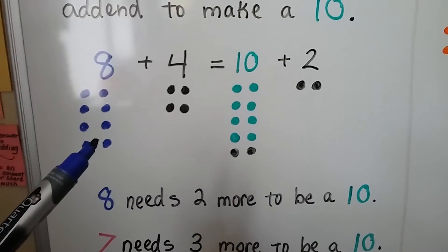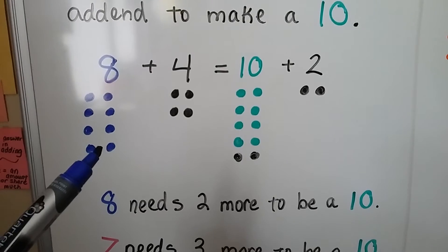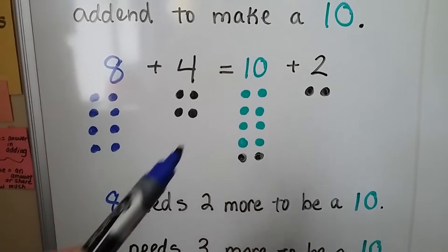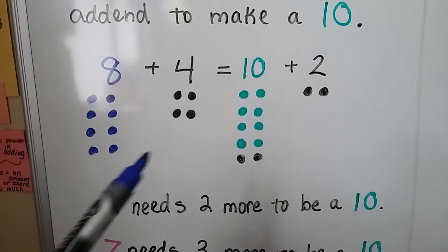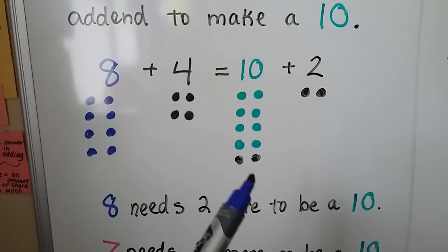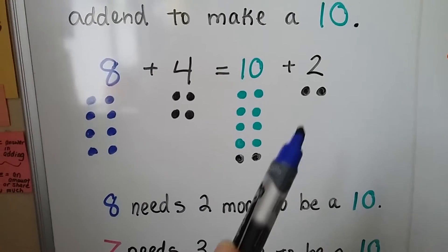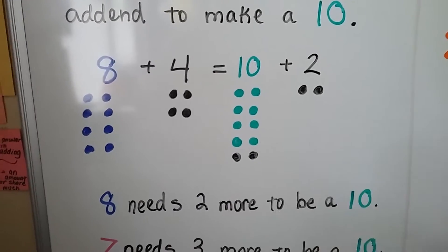8 just needs two more to be a 10, so it takes it from the 4. Now it's a 10 and the 4 becomes a 2.